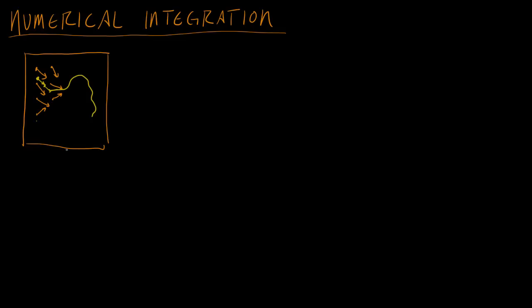Last time we used Euler's method to solve this. We said the next position in time equals the current position plus H — the time step — times the function evaluation F evaluated at the current time and location. That got us decent results; we got a path for our particle. But we want to see if we can do a little better and develop a more precise method that requires fewer calculations.